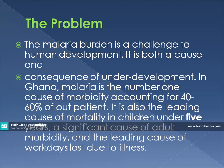In Ghana, malaria is the number one cause of morbidity. Morbidity means that people are not able to move — they are bedridden, can't go to work, can't go to school. Malaria accounts for about 40 to 60 percent of such patients. It is also the leading cause of mortality in children under the age of five years, and a significant cause of adult morbidity and a leading cause of work days lost due to illness.